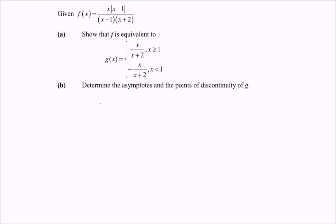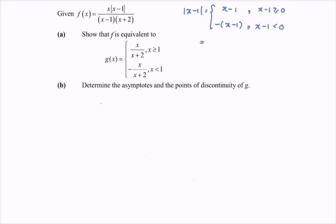So here we have the modulus of (x minus 1), which is equal to: (x minus 1) when x minus 1 is greater than or equal to 0, and negative (x minus 1) when x minus 1 is less than 0. Simplifying, the modulus of (x minus 1) equals (x minus 1) when x is greater than or equal to 1, and negative (x minus 1) when x is less than 1. So that is the definition for the absolute value of (x minus 1).